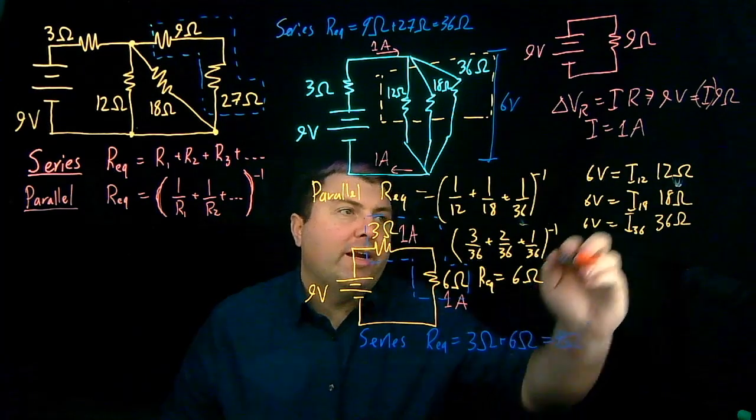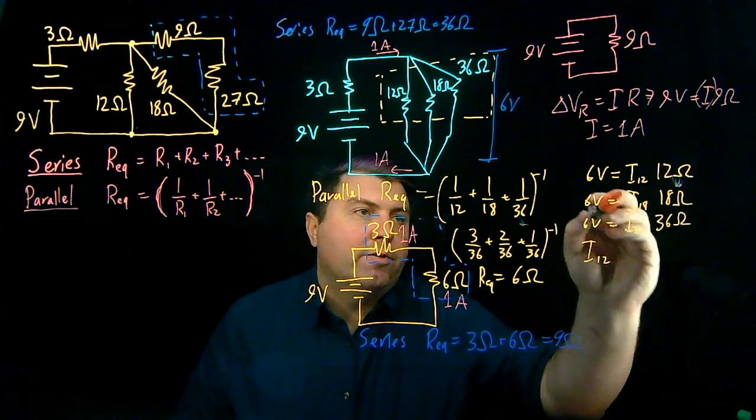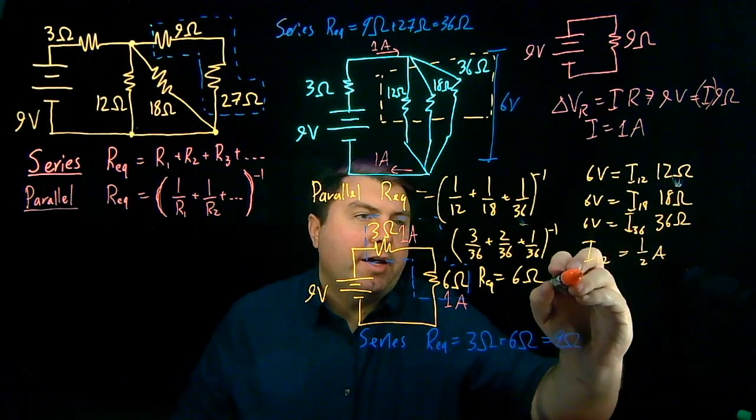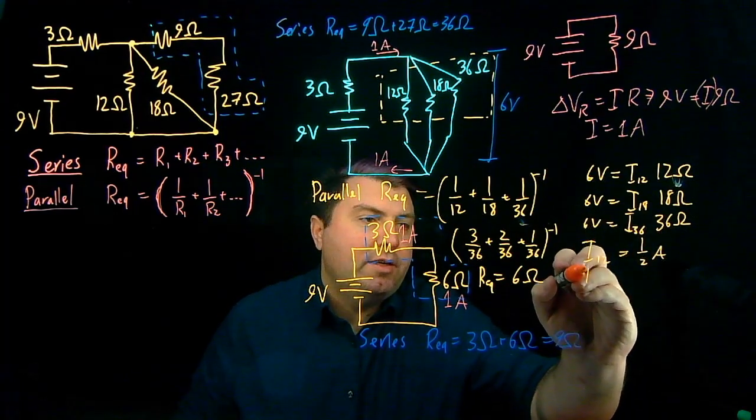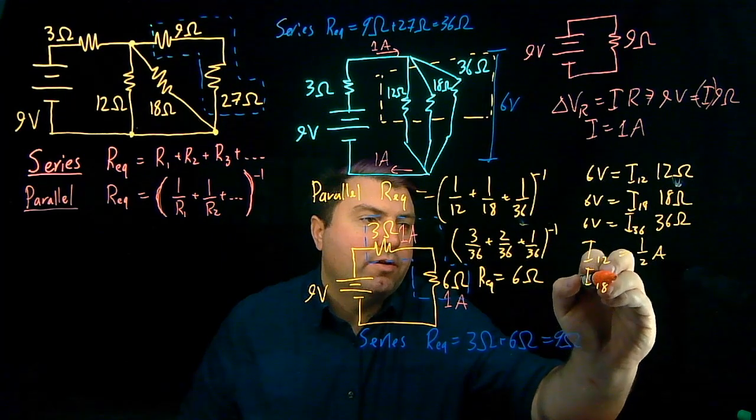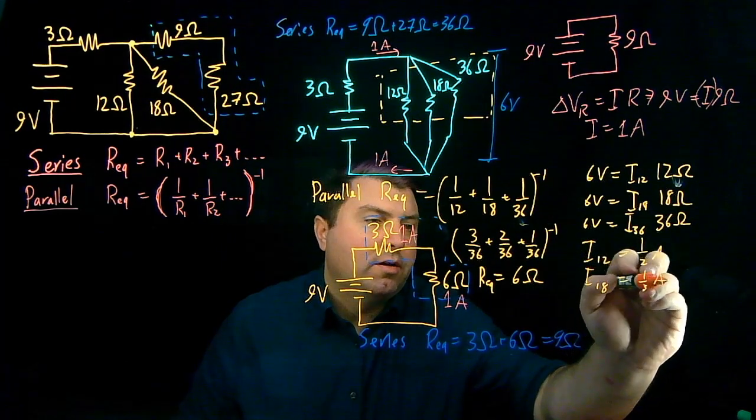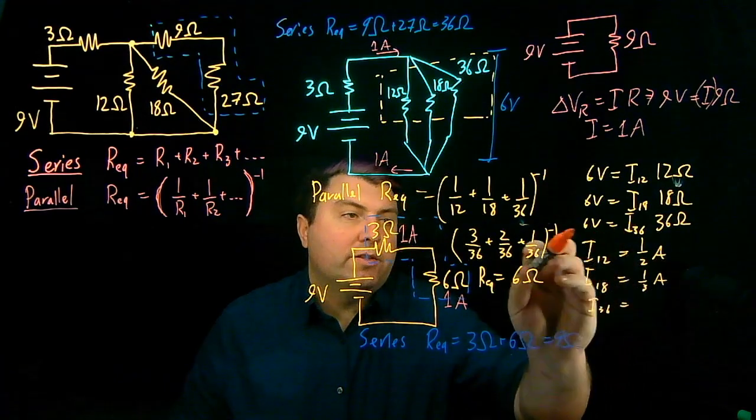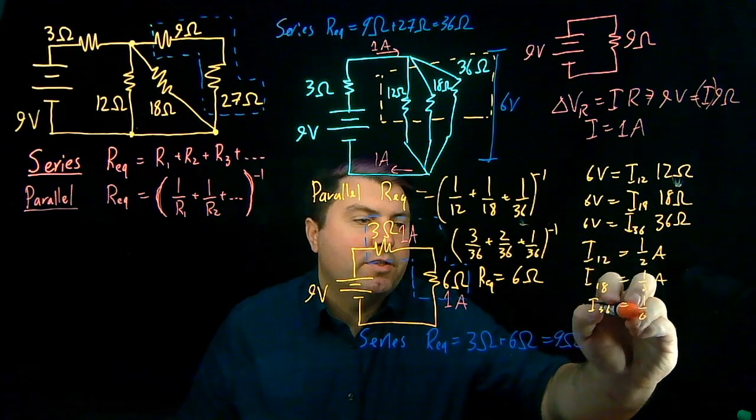So a little bit of math later, and we get that our I_12 is going to be 6 divided by 12 or 1 half of an amp. I_18 is going to be 6 divided by 18 or 1 third of an amp. And I_36 is going to be 6 divided by 36 or 1 sixth of an amp.